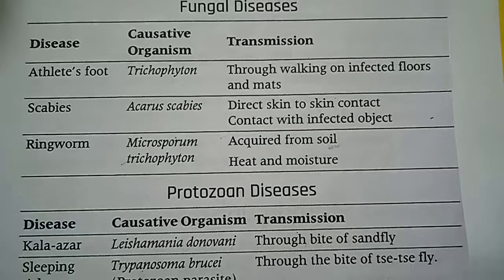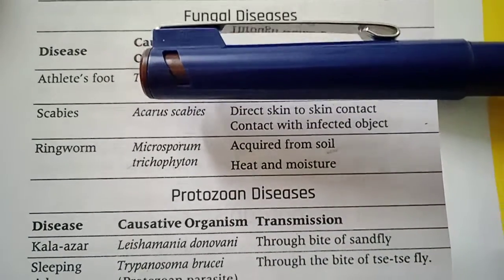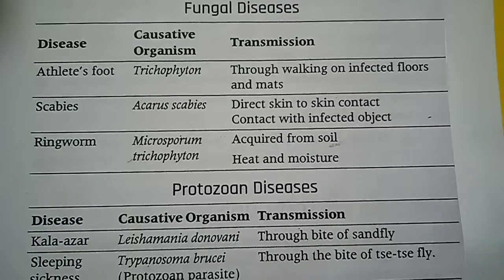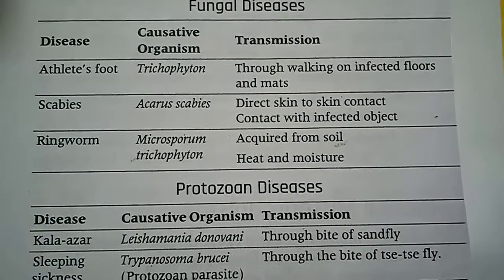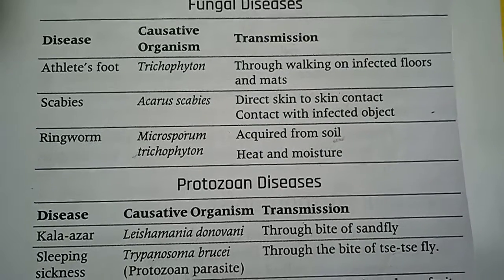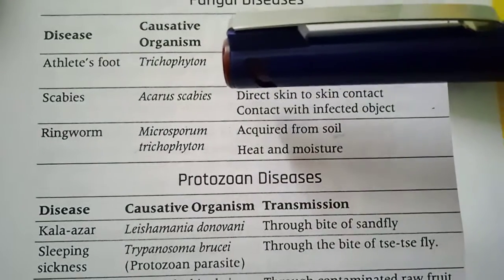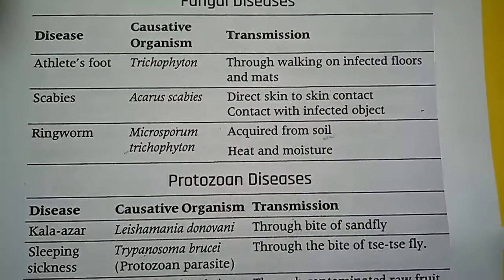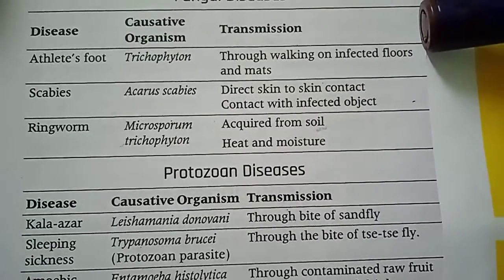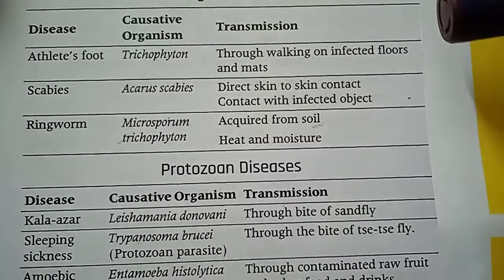Athlete's foot — the infection occurs on the toes. If you wear tight shoes and chappals, you will get this infection on the toes. The causative organism is Trichophyton. Transmission occurs through walking on infected floors and mats, and also through direct skin-to-skin contact.